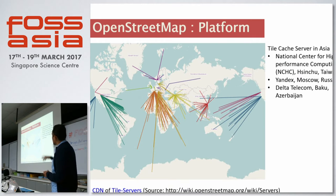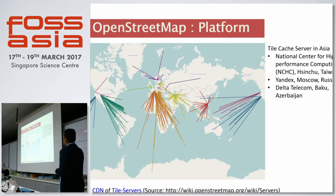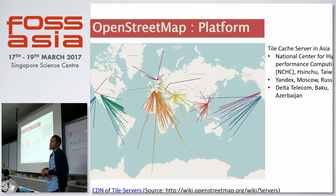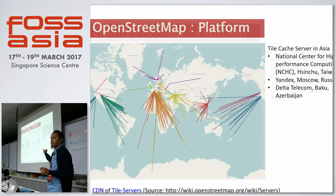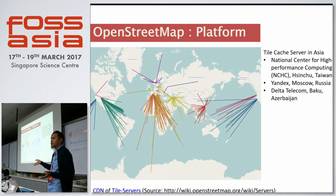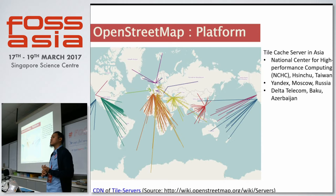This is all the tile cache servers of OpenStreetMap. In Asia, there are three being served by the National Center for High Performance Computing in Taiwan, and then there's Yandex — that's Google's biggest competitor in Russia, even bigger than Google, actually. There's also Delta Telecom in Azerbaijan. You can host your own tile cache server and put it as part of the network. You don't need a really high-end server, but you do need a good internet connection because traffic on the tile server is around 200 terabytes per month.